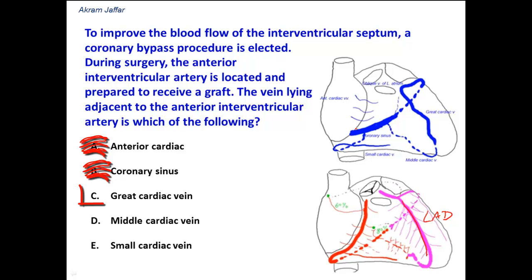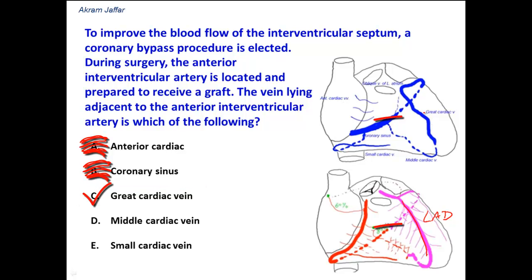The great cardiac vein — actually, this is the correct answer. The great cardiac vein is located on the anterior surface of the heart and follows the left anterior interventricular artery, then passes to the left, curving over the left border of the heart where it accompanies the circumflex branch. Then, on the posterior surface of the heart, it receives the oblique vein of the left atrium to form the coronary sinus. This is the correct answer, but let's check the other options.